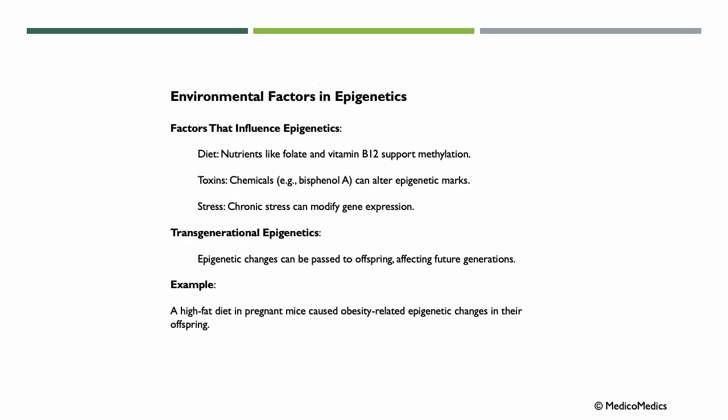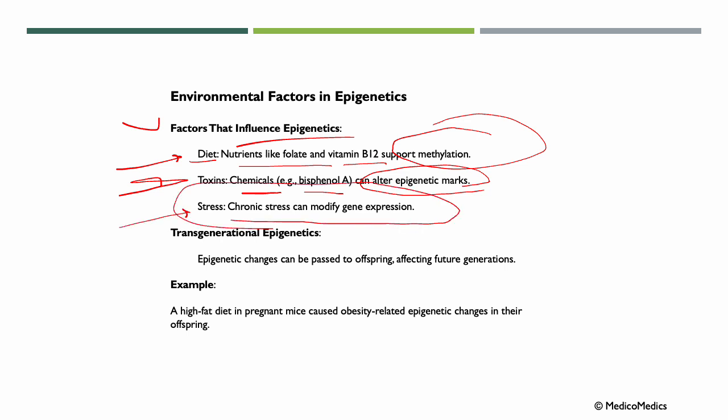Some environmental factors in epigenetics. Factors that influence epigenetics include, for example, diet. Nutrients like folate or vitamin B12 support methylation. Toxins. Chemicals like bisphenol A can alter epigenetic marks. Stress. Chronic stress can modify gene expression.